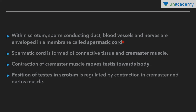The spermatic cord is formed of connective tissue and cremaster muscles. Dartos muscles form the scrotal wall and scrotal septa, while cremaster muscles form the spermatic cord. Contraction of both cremaster muscles and dartos muscles moves the testis towards the body, maintaining the position of the testis and scrotum.